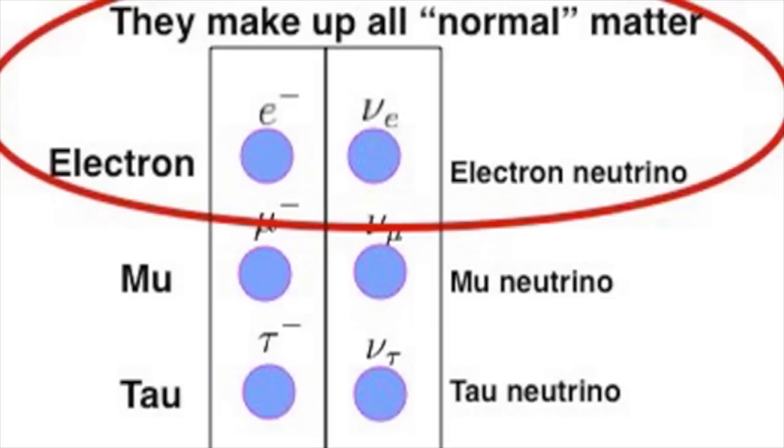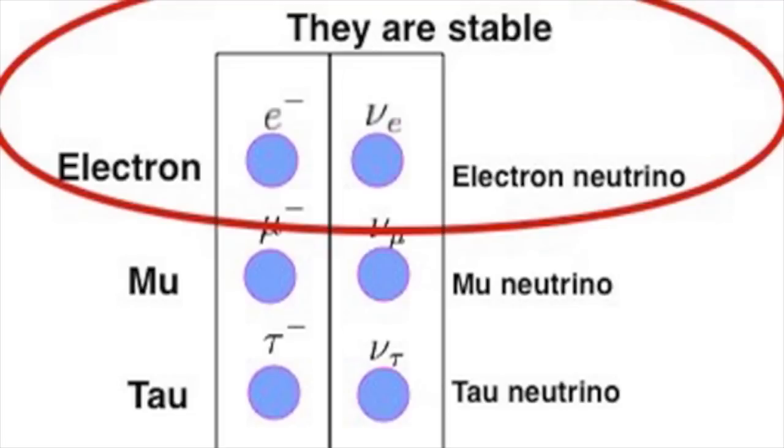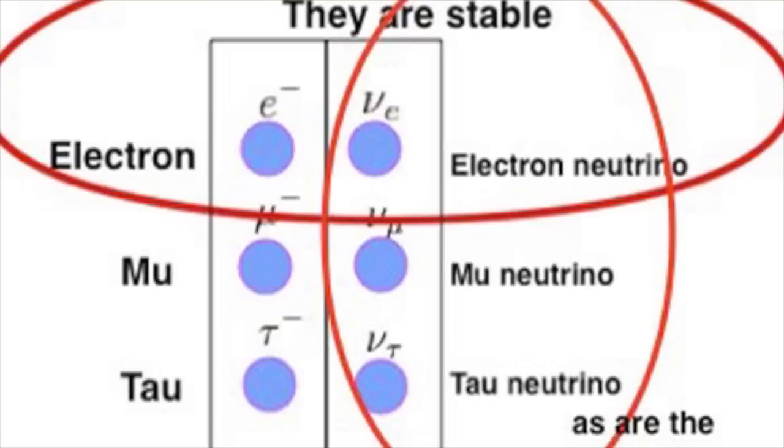The electron with its neutrino is part of all normal matter in our universe. And these are stable particles. Although in fact, all of the neutrinos are stable, whereas the charged mu and tau are not.